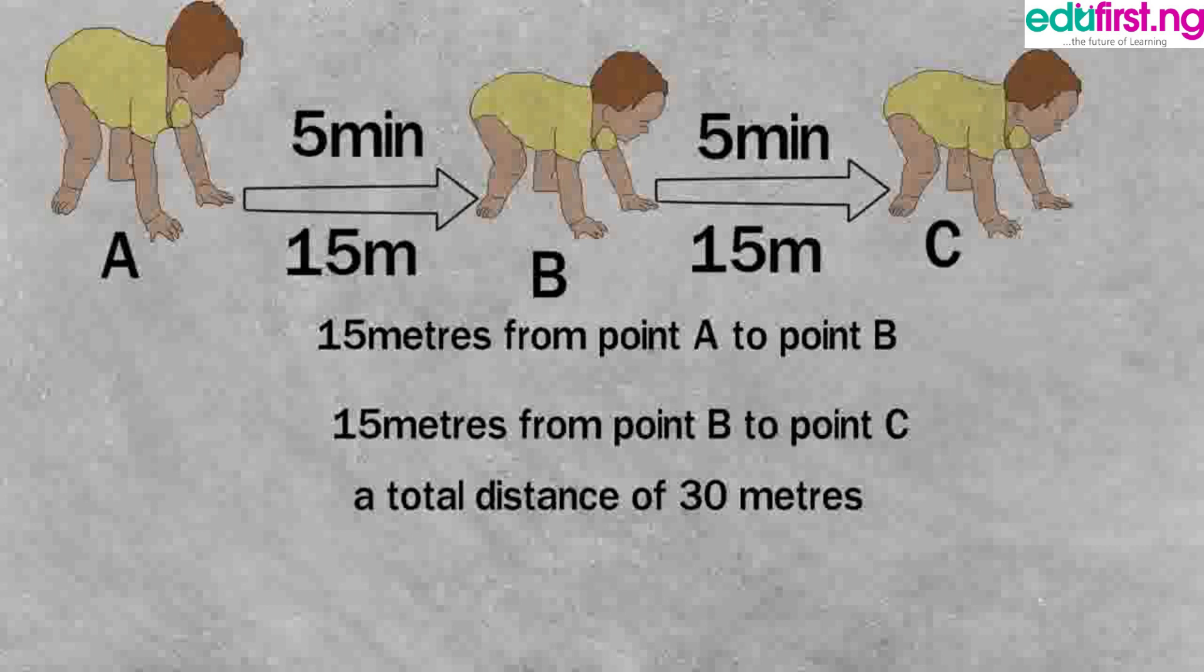Lastly, we also noticed that during the course of the baby's movement there was a change in position by the baby from point A to point B to point C. The point where the baby moved from point A to point B is the displacement.